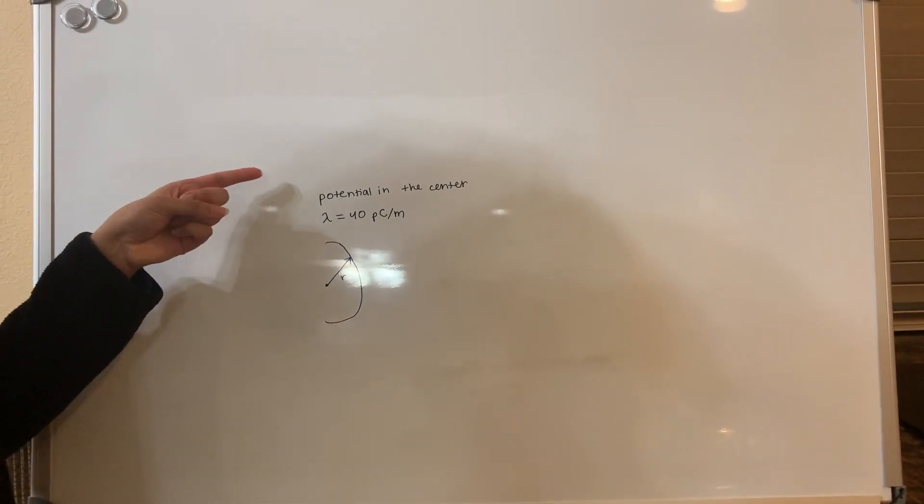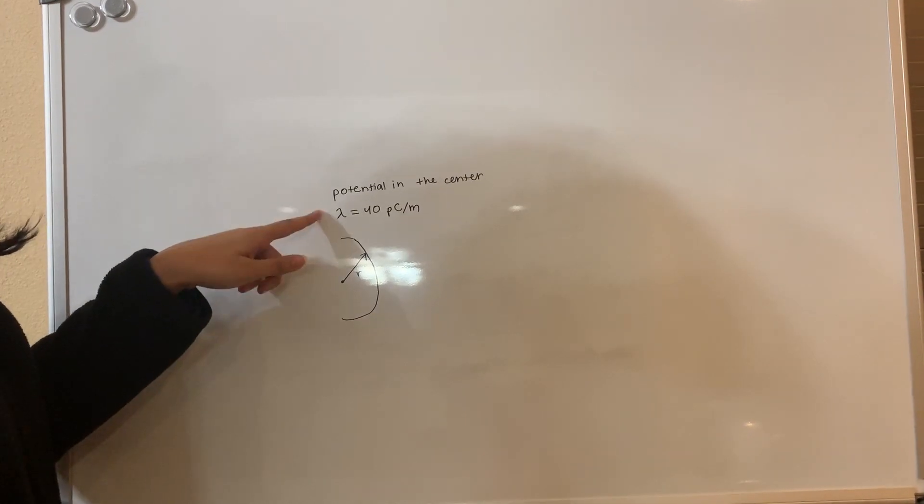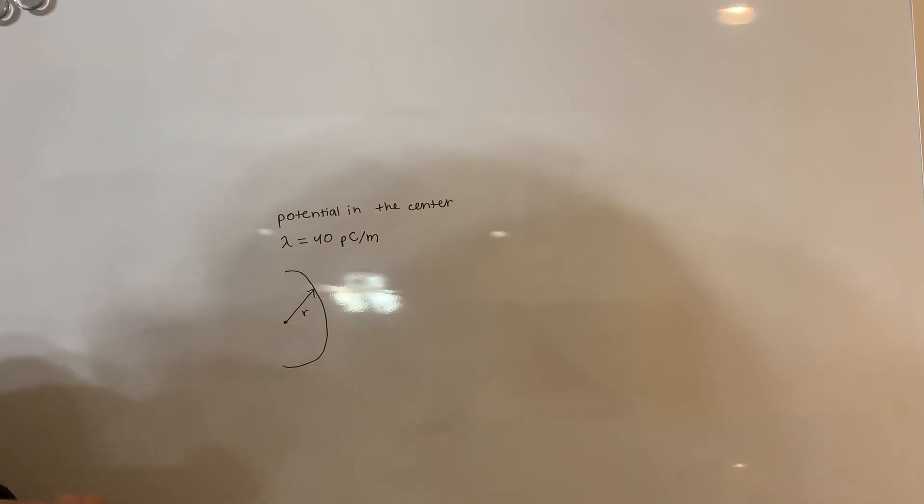So we want to find the electric potential in the center of this semicircular ring. And it has a linear charge density of lambda equals 40 picocoulombs per meter.